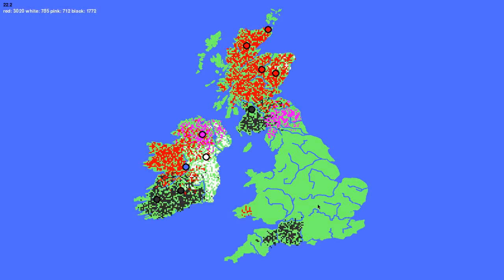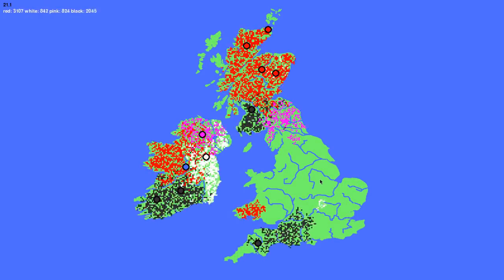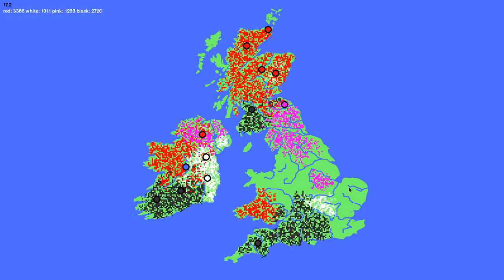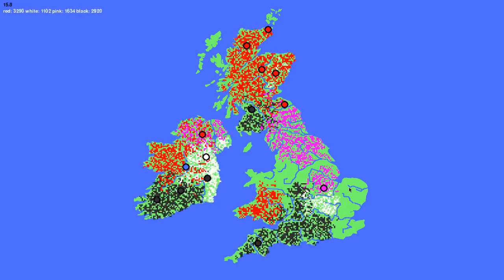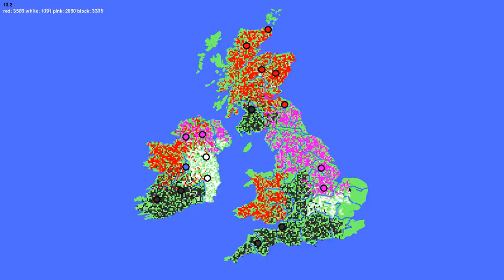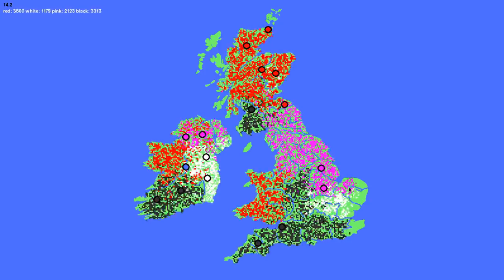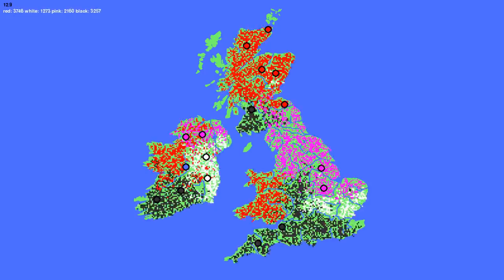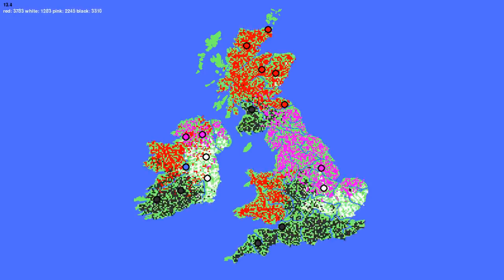Today I've created a program which simulates how different populations spread out and mix over time. In the simulation there are 4 coloured factions: pink, red, black and white, each trying to expand.